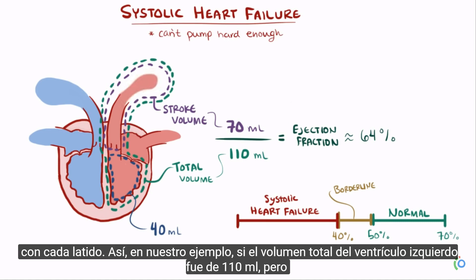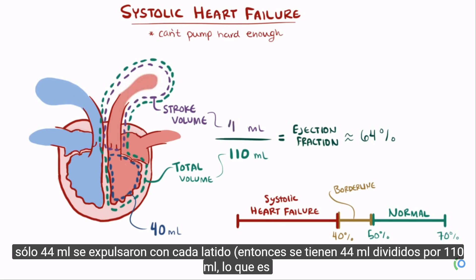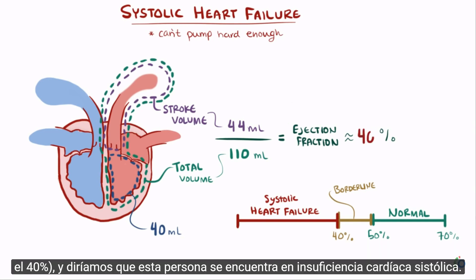In our example, if the total volume of the left ventricle was 110 milliliters but only 44 milliliters was pumped out with each beat, then you have 44 divided by 110, which is 40%. We would say that person is in systolic heart failure.